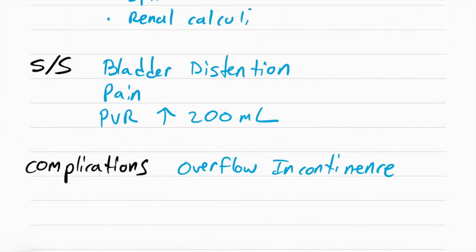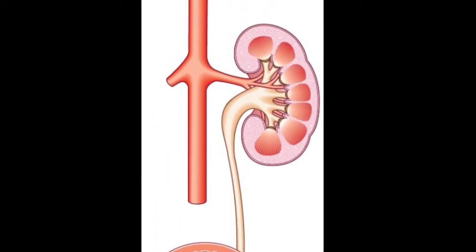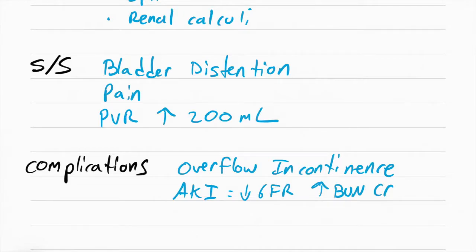Acute kidney injury can happen. This happens when the BPH or the obstruction blocks the urine from going out and the urine actually backs up from the bladder up to the ureters and into the kidneys and it causes damage. This is acute kidney injury. They'll have a decrease in GFR, which means glomerular filtration rate, and an increase in BUN and creatinine.